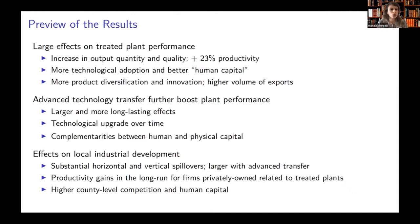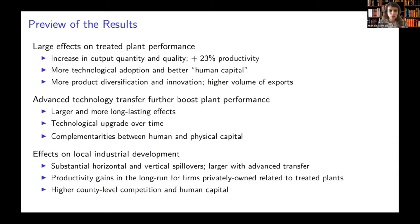In terms of results, we find that technology transfer had a large and persistent effect on the performance of treated plants. We document an increase in both output quantity and quality, and an average productivity difference of 23%. We also find that these firms adopted more technology, especially when China started to gradually open up to trade, and employed better human capital. In the long run, in the late 1990s, these firms also had more product diversification and innovation, and engaged in exports to a larger extent.